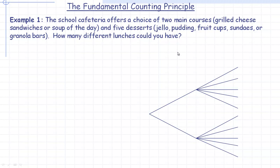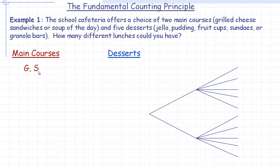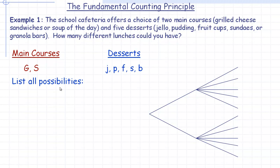Let's start with the main courses. I'll abbreviate them — capital G for grilled cheese and capital S for soup of the day. For the desserts I'll use lowercase letters: J is jello, P is pudding, F is fruit cup, lowercase S is sundae, and lowercase B represents having a granola bar. We could first of all list all the possibilities.